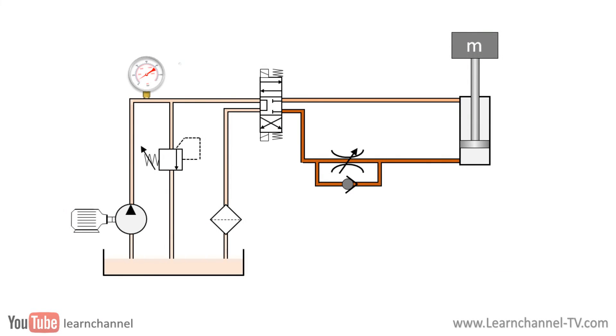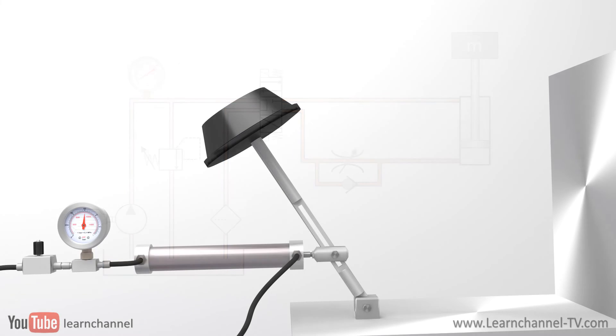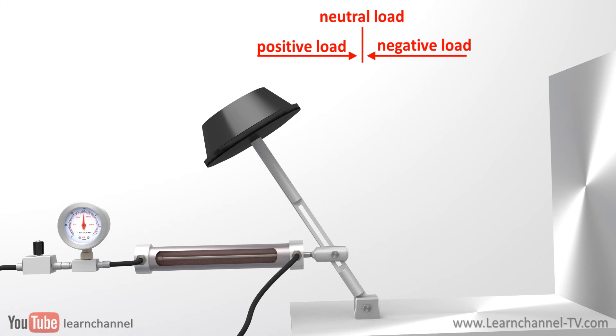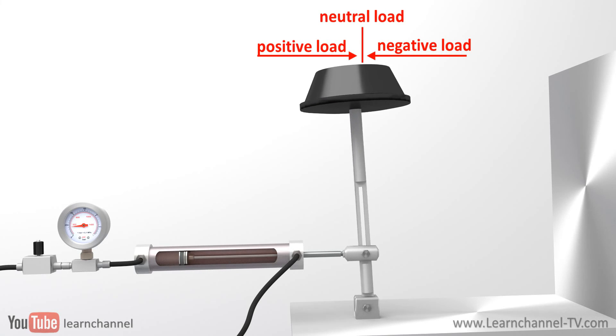But how are these flow control valves installed? One method is called meter in. Here, you control the rate of flow to the actuator. Here you see how the flow control valve restricts the volume flow when the cylinder extends. The advantage of meter in is that it is very accurate to a positive load.